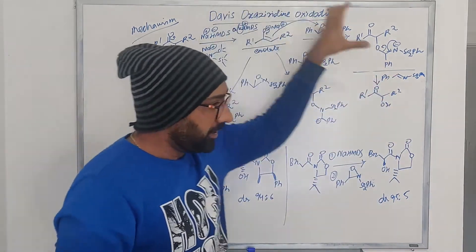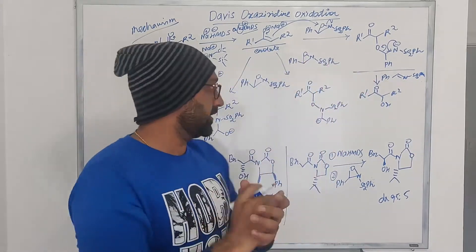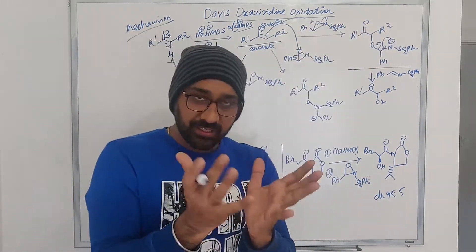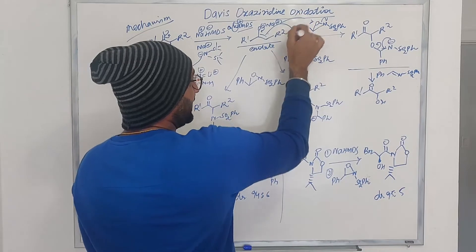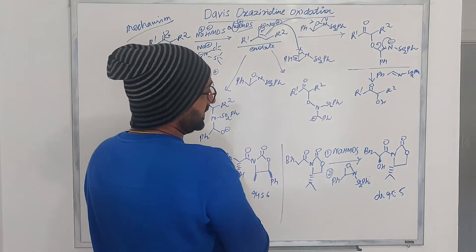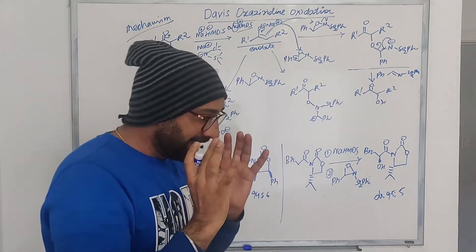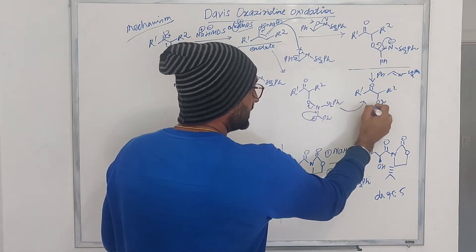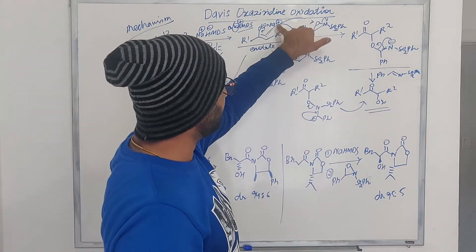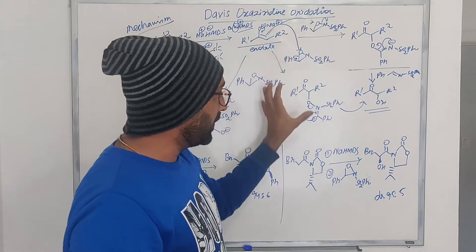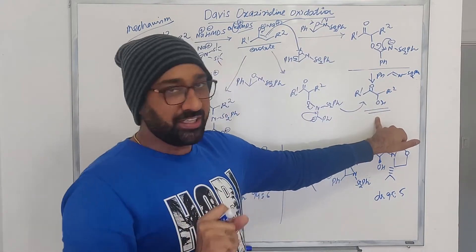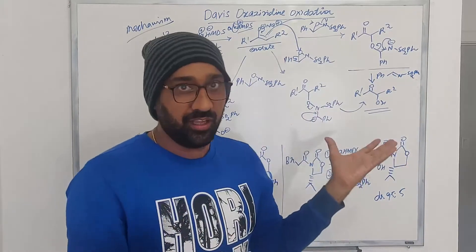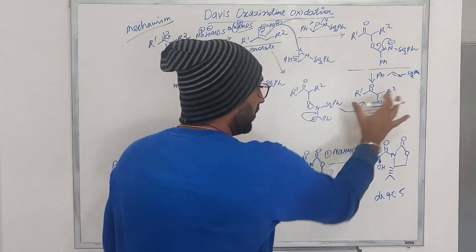Let us talk about other mechanistic pathways that are possible. There is an alternative pathway where when the enolate attacks the oxygen, the bond opening takes place on the other side, leading to a different intermediate — but ultimately this also leads to the same alpha hydroxylation product. So it does not matter which direction the bond opens; the product you are going to get is still the alpha hydroxylation. This preferred pathway is the more logical one since the oxygen-nitrogen bond is weak, but the alternative also leads to product.